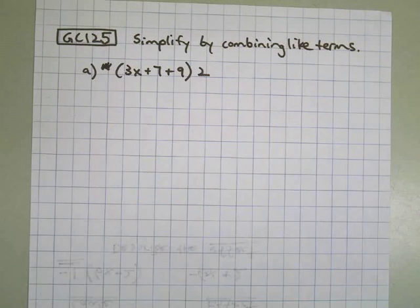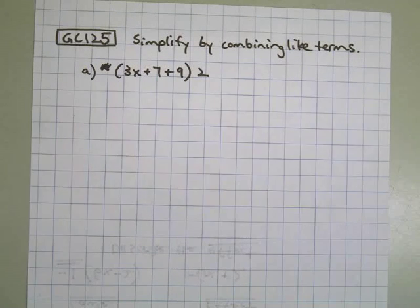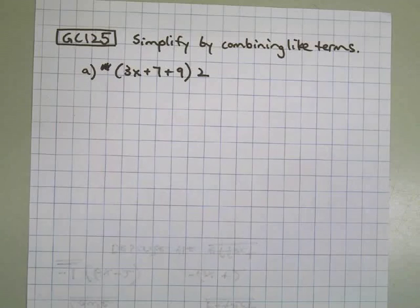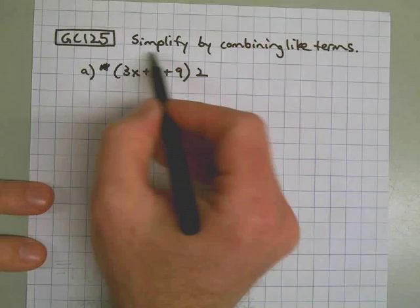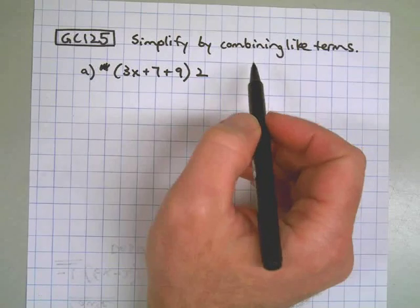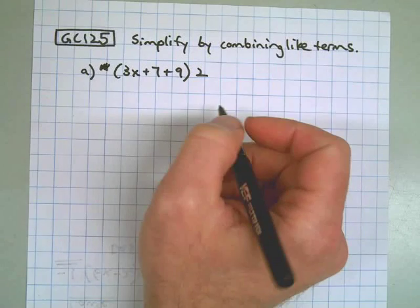Here we are working on GC 125. The directions are to use the distributive property to simplify the following problems, and combine like terms where possible. The most important words here are to simplify by combining like terms.